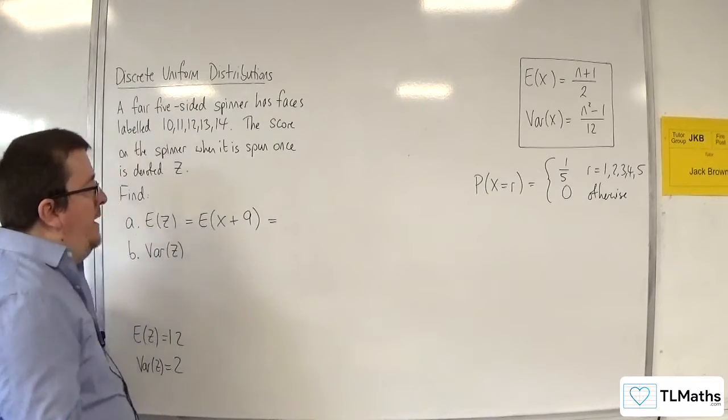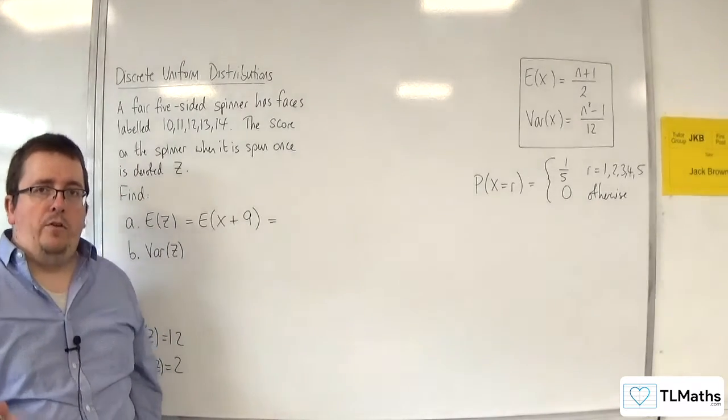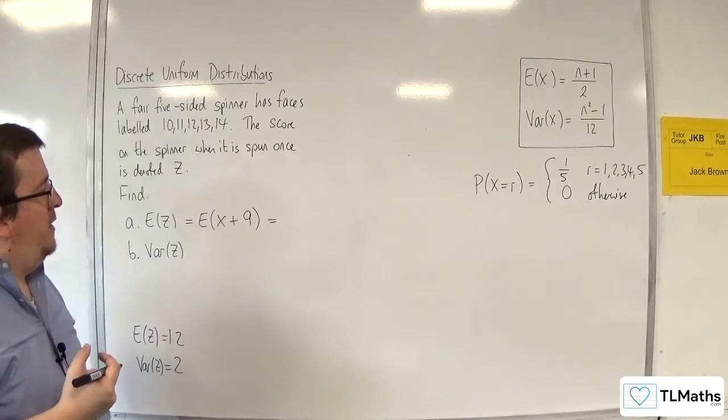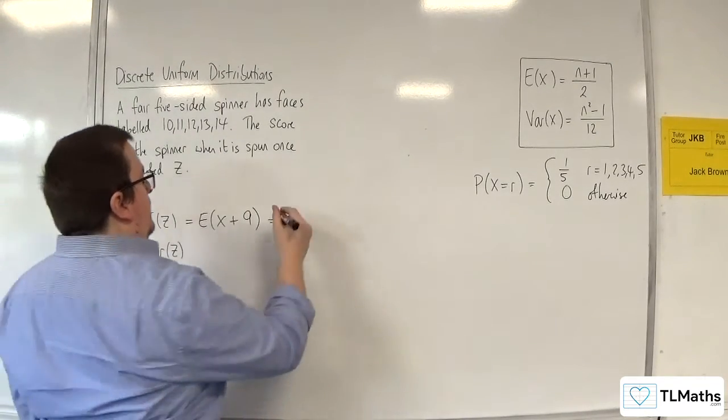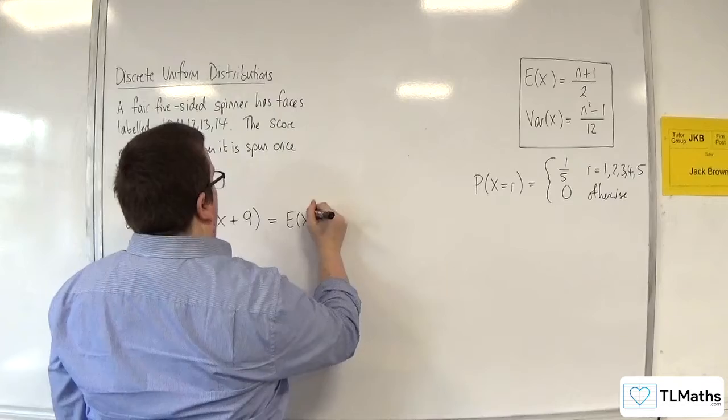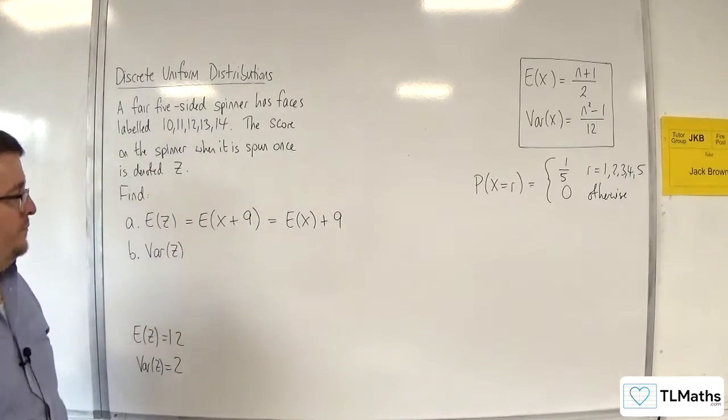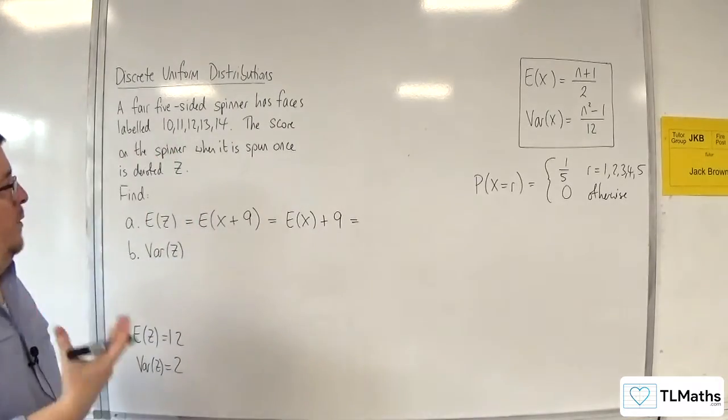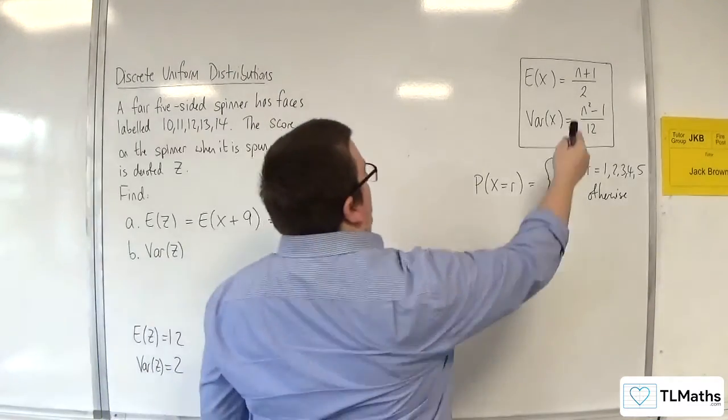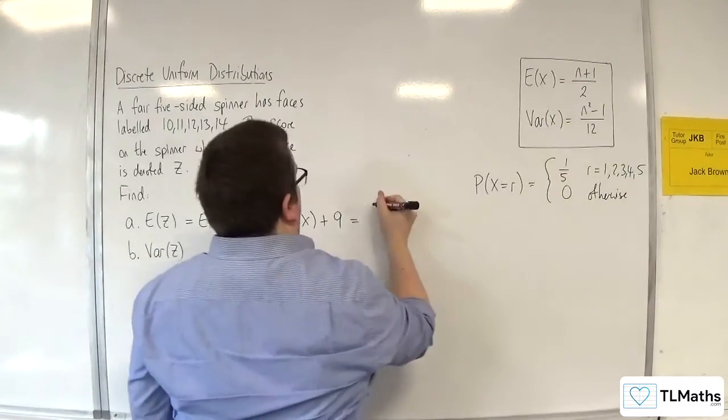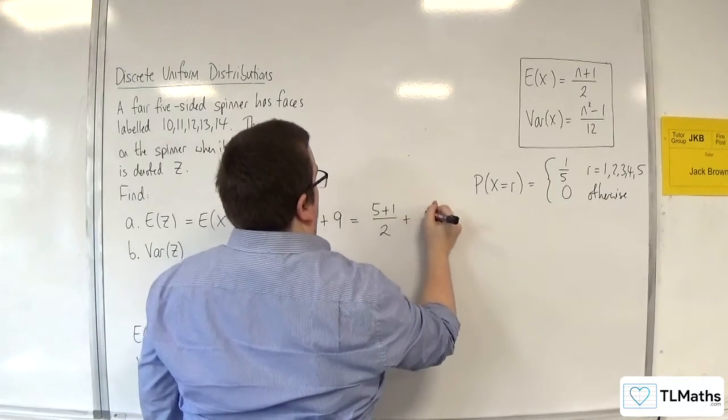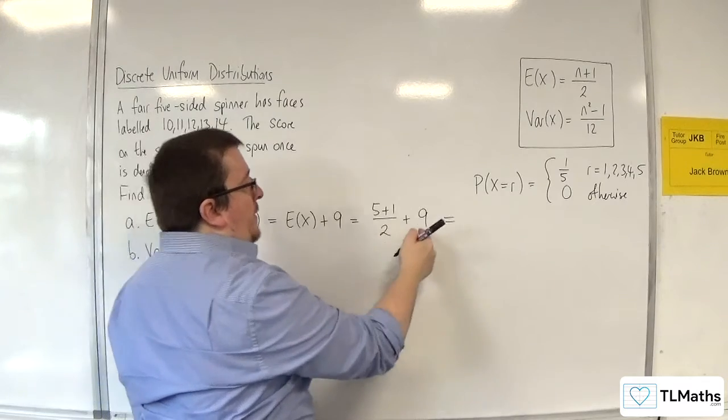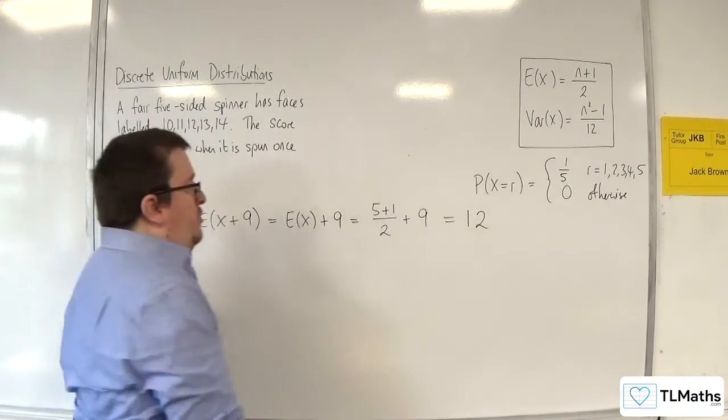Now, knowing what we know about E of x, for this I could just say, I know then that that is E of x plus 9. So this is equal to, E of x is going to be 5 plus 1 over 2, so that's 6 over 2 which is 3, plus the 9, which is the 12.